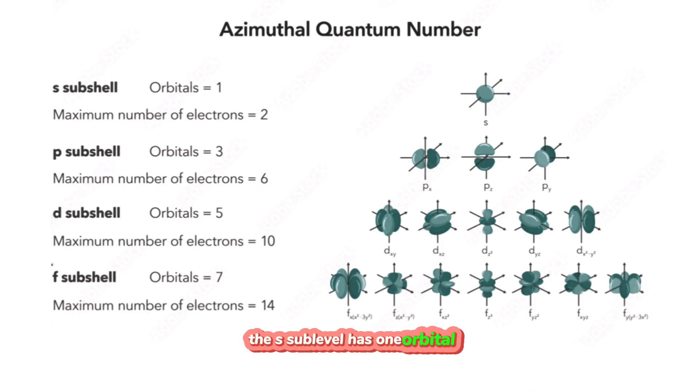Sublevels, azimuthal quantum number. Within each energy level, there are sublevels or subshells. These are labeled as S, P, D, or F. The S sublevel has one orbital, the P sublevel has three orbitals, the D sublevel has five orbitals, and the F sublevel has seven orbitals.